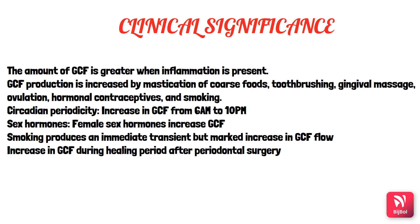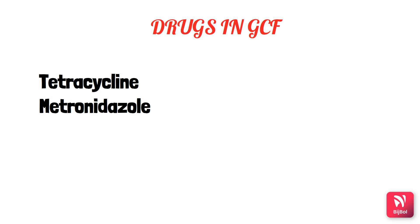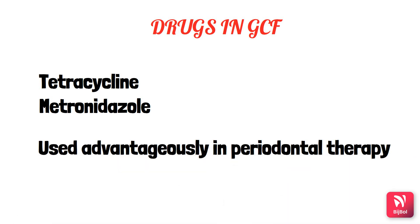GCF has circadian periodicity — it gradually increases from 6 AM to 10 PM, then decreases. Female sex hormones increase vascular permeability, increasing GCF; this is why ovulation and hormonal contraceptives increase GCF flow. Smoking causes an immediate, transient but marked increase in GCF flow. GCF production also increases during the healing period after periodontal surgery. Drugs such as tetracycline and metronidazole are excreted through GCF and can be used advantageously in periodontal therapy.